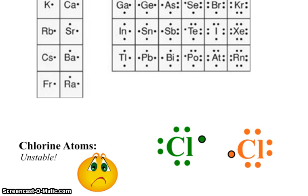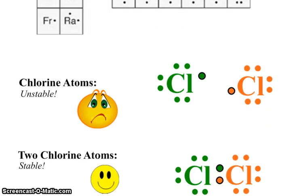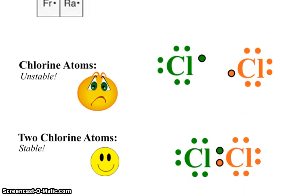By themselves, chlorine atoms are unstable. A chlorine atom has seven valence electrons, it really wants eight like a noble gas. So two chlorine atoms both have an available valence electron to share, and so that's what they do. And two chlorine atoms together are very stable,